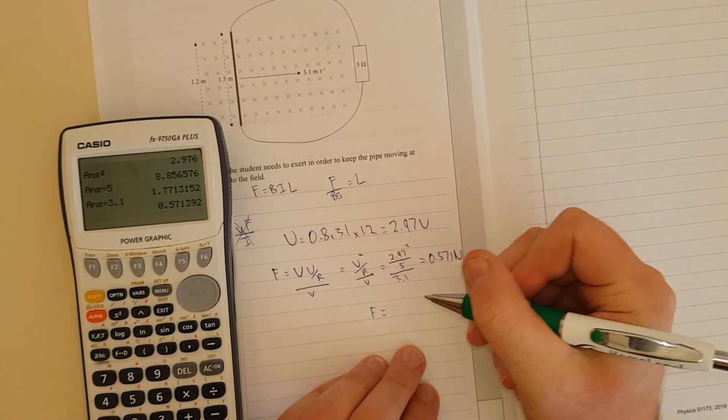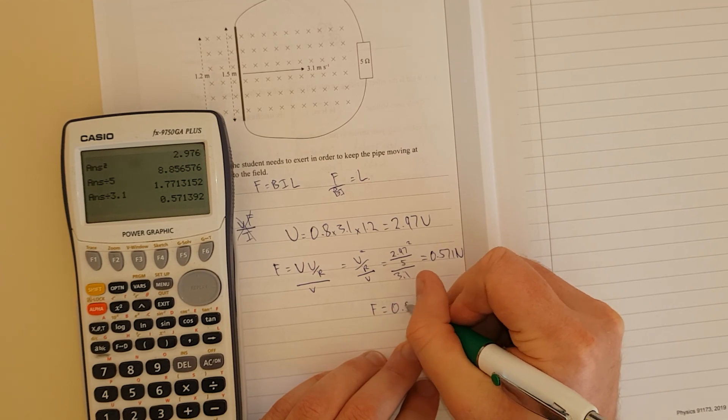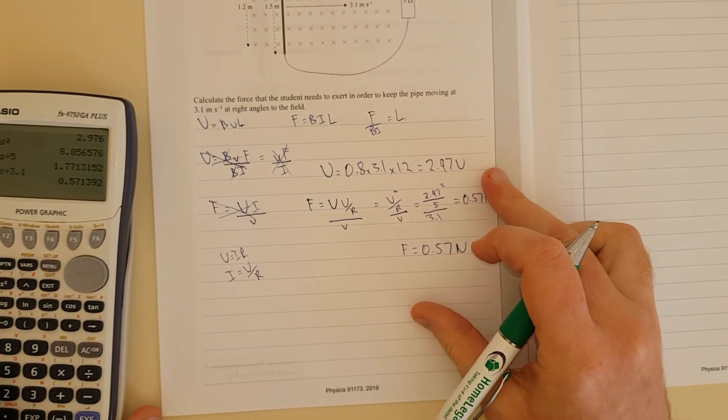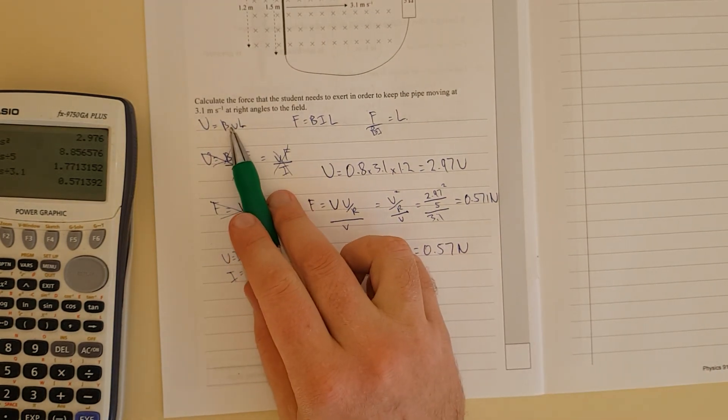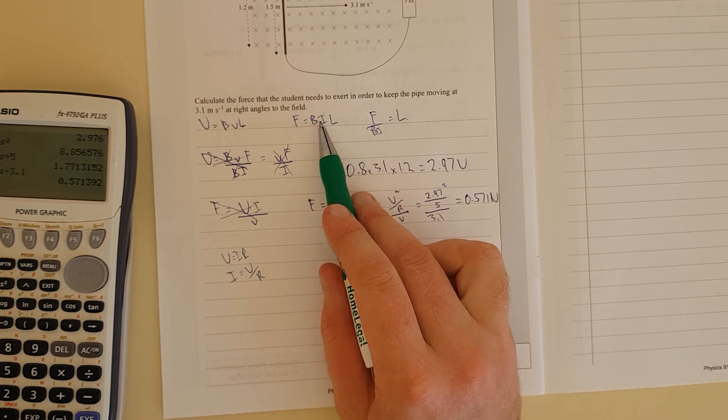So we have the force is equal to 0.57 newtons. I did a really convoluted way to do this, actually. Probably should have just worked out what the voltage was here, substituted that in to this formula here. It would have been a whole lot easier. But whatever. Thank you very much.